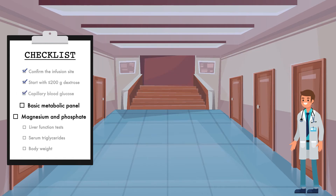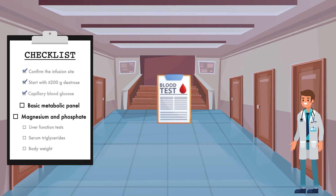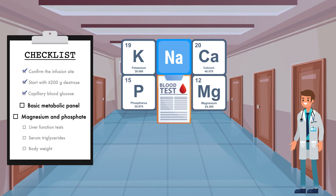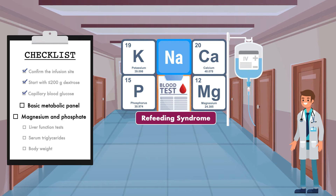The next items on the checklist include obtaining a basic metabolic panel and obtaining magnesium and phosphate measurements. The basic metabolic panel, or BMP, gives you values for sodium, potassium, and calcium, so this is where you can gain an understanding of how the patient's electrolytes need to be managed. If any electrolytes — especially potassium, phosphate, or magnesium — are low, they should be corrected with IV fluids before parenteral nutrition is administered. This is done to minimize the risk for refeeding syndrome, which is a condition characterized by a shift of those electrolytes into the cells when nutrition support is initiated.